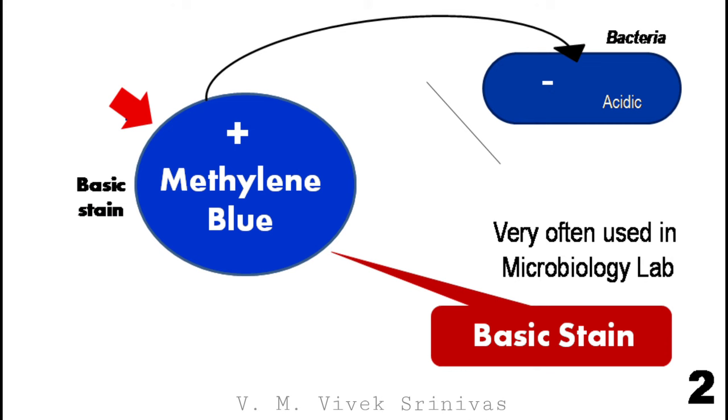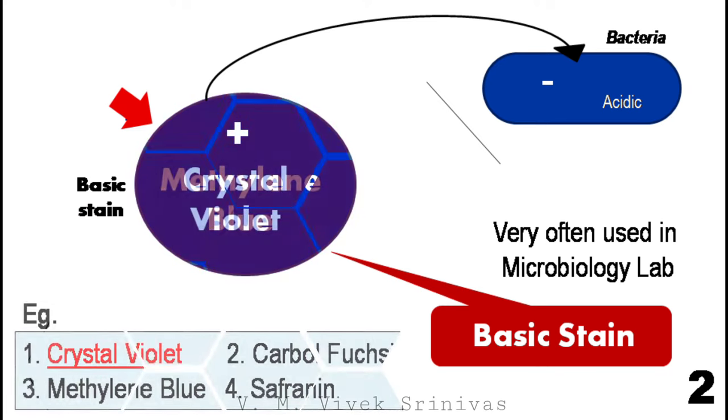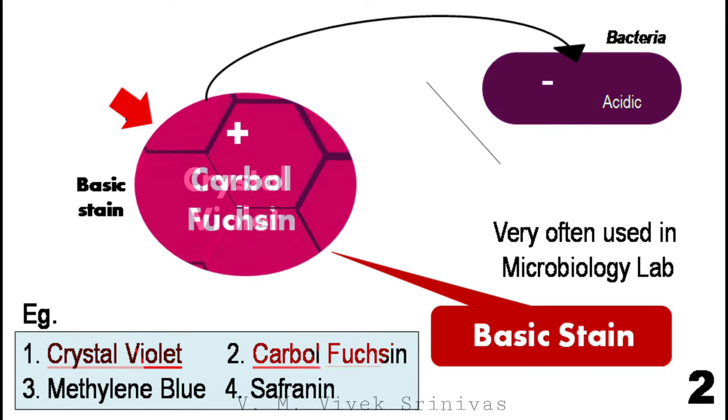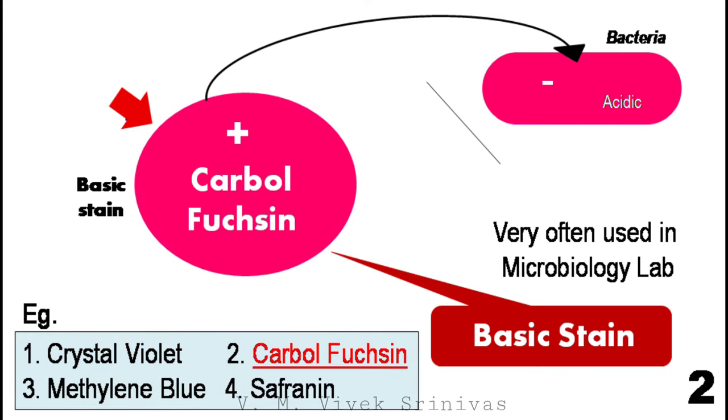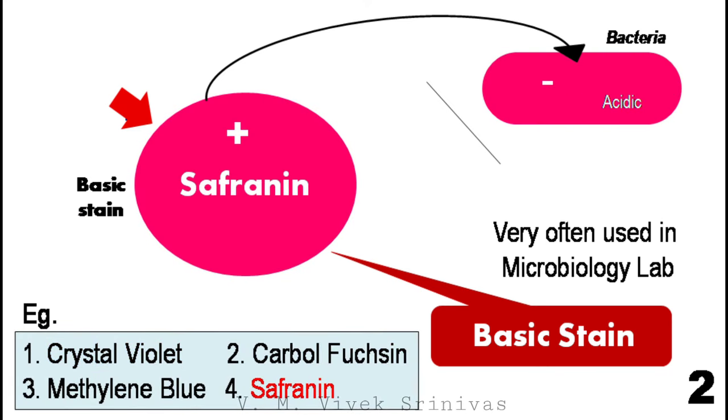The other examples of basic stains are crystal violet, carbolfuchsin, and safranine.